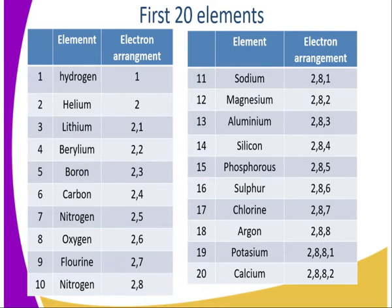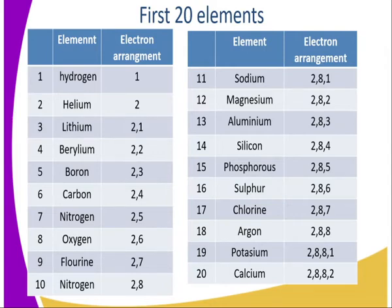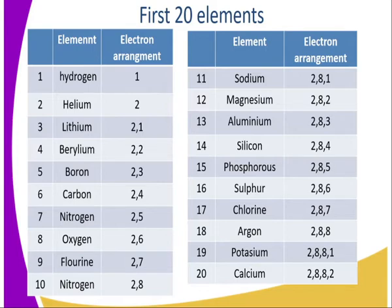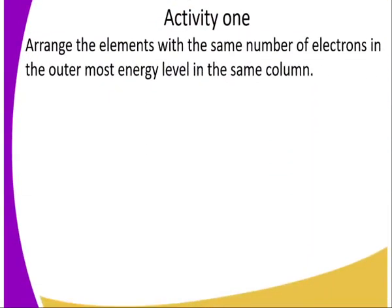For atomic numbers 11 to 20 — sodium up to calcium — remember these elements are arranged in order of atomic number. Their electronic arrangement has two electrons in the first energy level (complete), eight in the second energy level (also complete), but the third energy level electron count varies, increasing by one as the atomic number increases, up to eight when that energy level reaches its maximum. Atomic number equals the number of protons in the nucleus, which also equals the number of electrons.